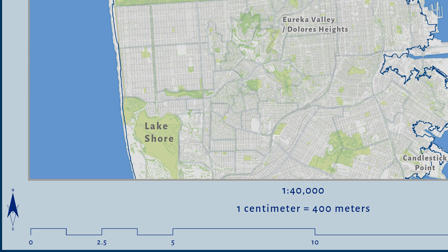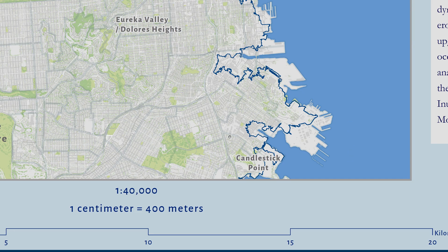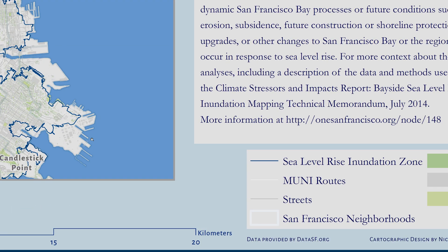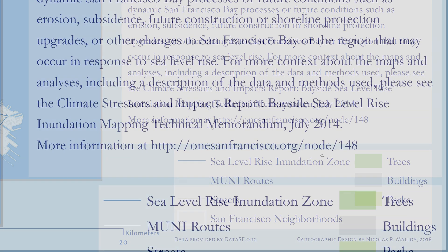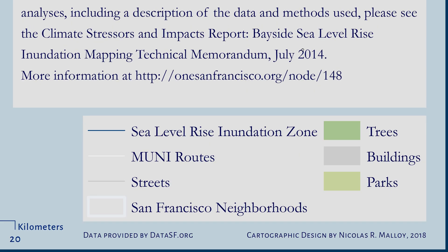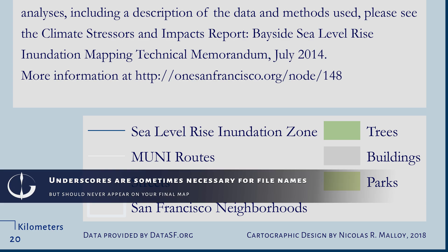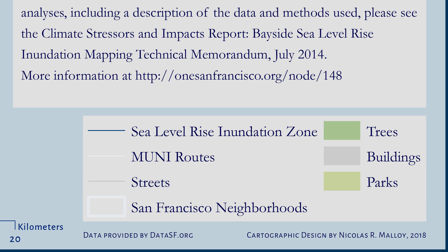Your map legend does not need a title but should include all of the layers except for the shoreline. For each layer, open the Properties window and navigate to the General tab. Clean up the labels for the layers by removing any underscores. The layer names are what will appear in the map legend and you want to avoid underscores on the final map.